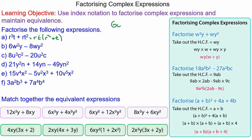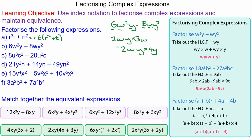Moving on to 6w squared y minus 8wy squared. A common factor of 6 and 8 is 2, of w squared and w is w, and of y and y squared is y, so 2wy is the highest common factor. 2 times 3 makes the 6, w times w makes w squared, 2 times 4 makes 8, and y times y makes y squared. So we have 2wy lots of 3w minus 4y.